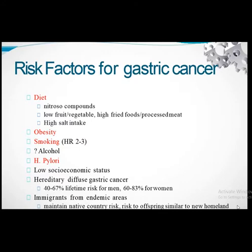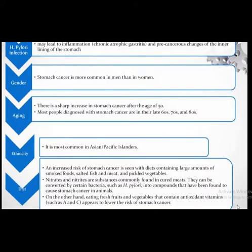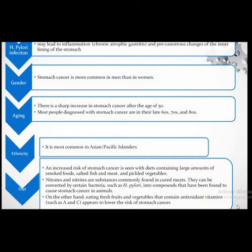Hereditary diffuse gastric cancer carries a 40–67% lifetime risk for men and 60–83% for women. Immigrants from endemic areas maintain their native country's risk. H. pylori is a major cause of stomach cancer, especially cancer in the lower distal part of the stomach, leading to inflammation, chronic atrophic gastritis, and precancerous changes. Stomach cancer is more common in men, and there is a sharp increase after age 50, with most patients diagnosed in their late 60s, 70s, and 80s.